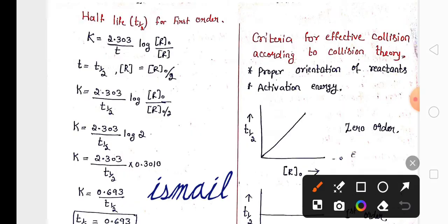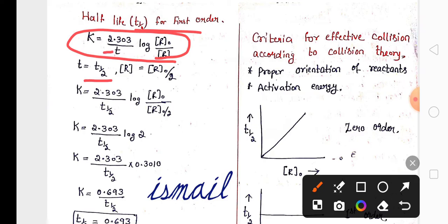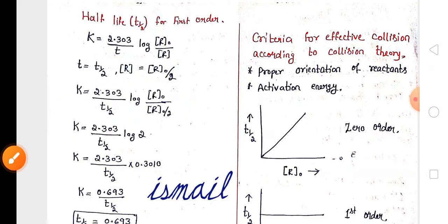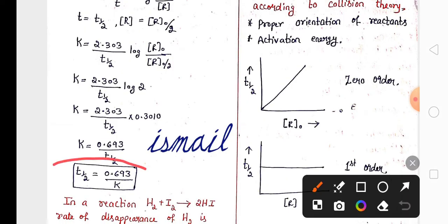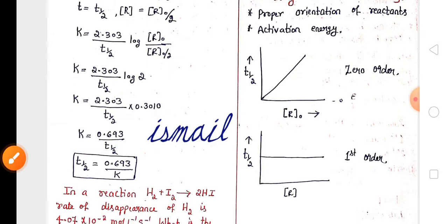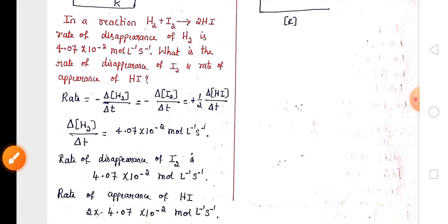For two marks, derive the half-life of first order. Write down the first order equation and substitute t as t½ and R as R₀/2. After substituting and taking log to value 0.3010, you get t½ = 0.693 / k. For first order, t½ is independent of the initial concentration of the reactant.